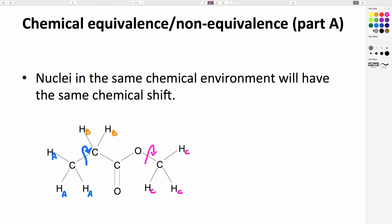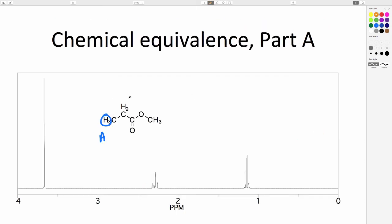Therefore, we expect to see three signals in the proton NMR spectrum for this molecule, which is what we do indeed see. Remember that we called these protons A, B, and C. There is a signal just above 3.5 ppm, a second one just above 2, and a third at about 1 ppm. So that's the first idea about chemical equivalence. We see the same number of signals as there are chemically unique protons in the molecule.